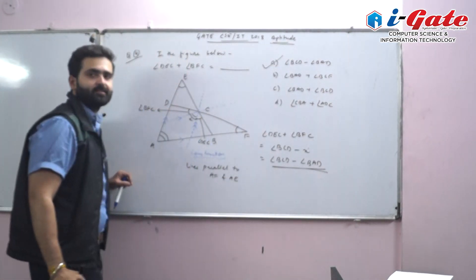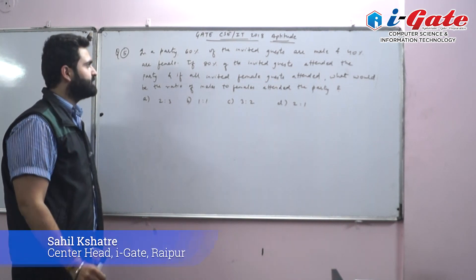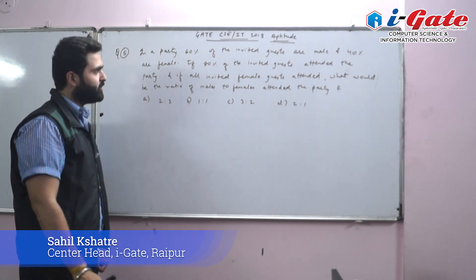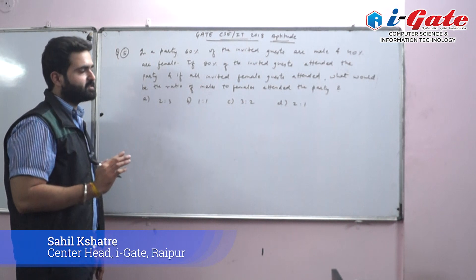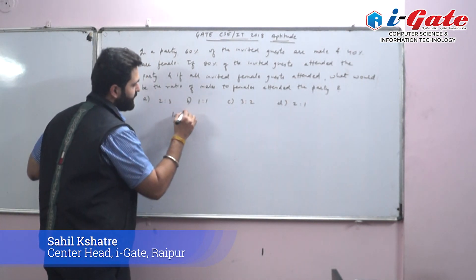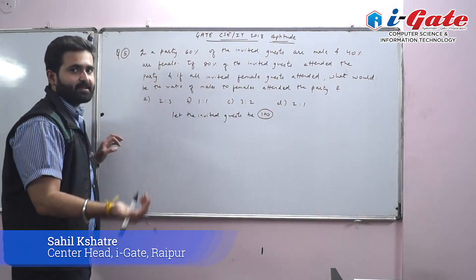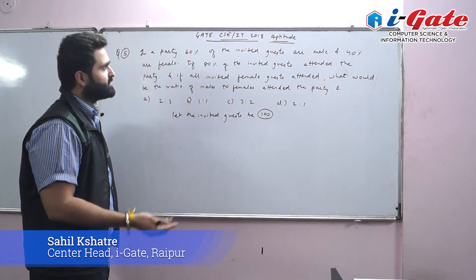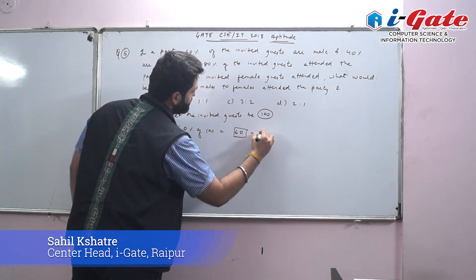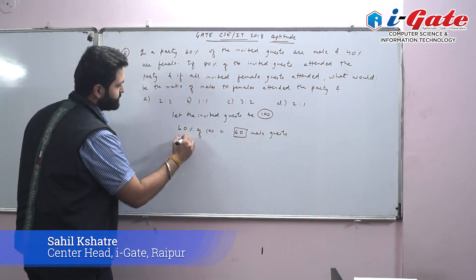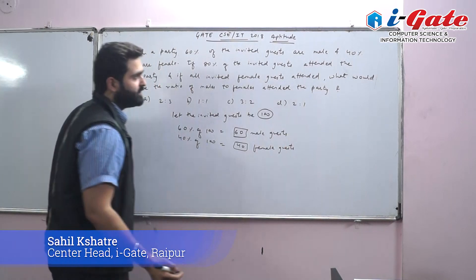Question 5: At a party, 60% of invited guests are male and 40% are female. If 80% of invited guests attended, and all invited female guests attended, what is the ratio of males to females who attended? Let total invited guests = 100. Then 60 are male and 40 are female.